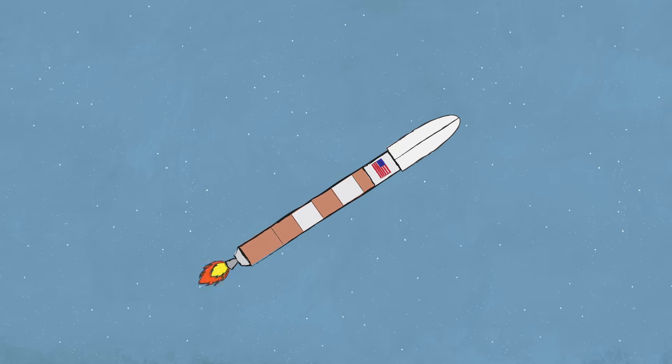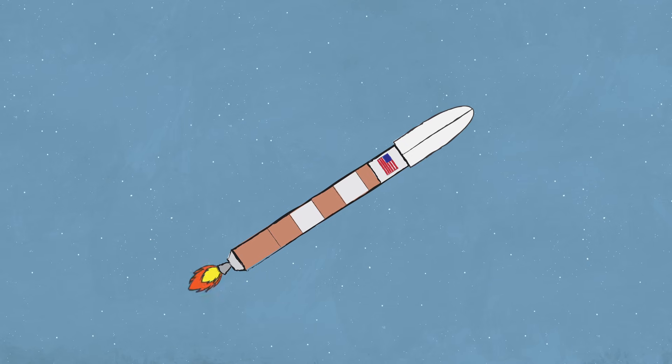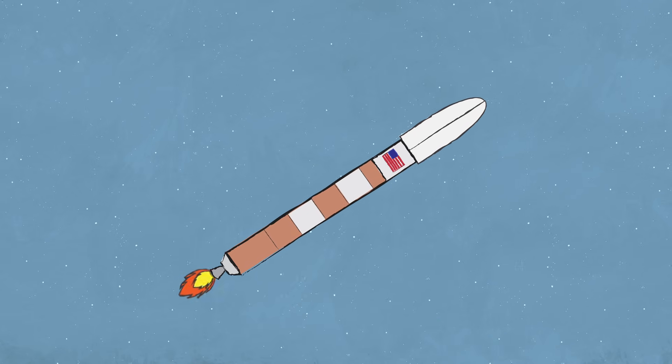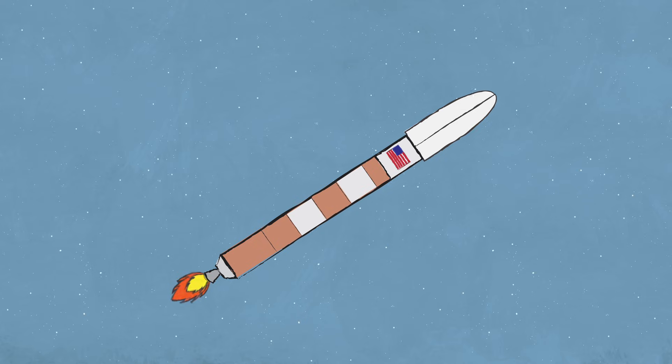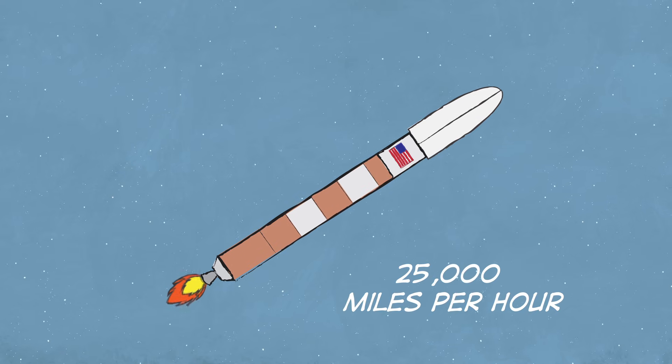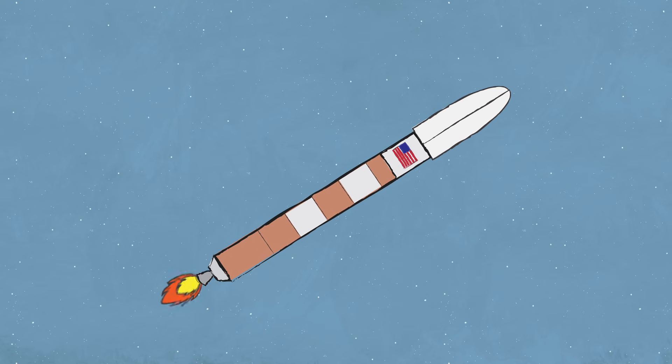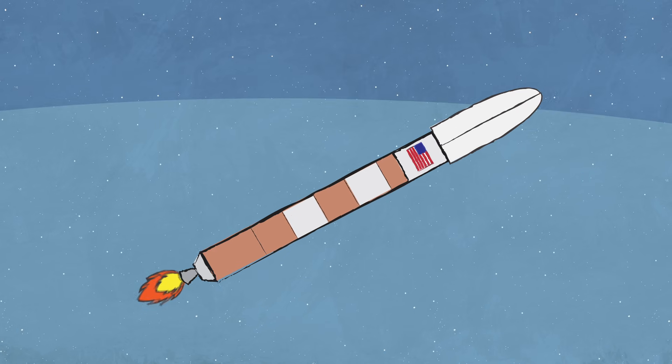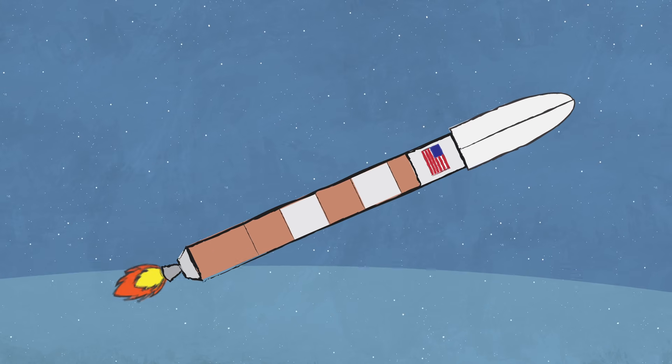To get into orbit, satellites first have to launch on a rocket. A rocket can go 25,000 miles per hour. That's fast enough to overcome the strong pull of gravity and leave Earth's atmosphere.